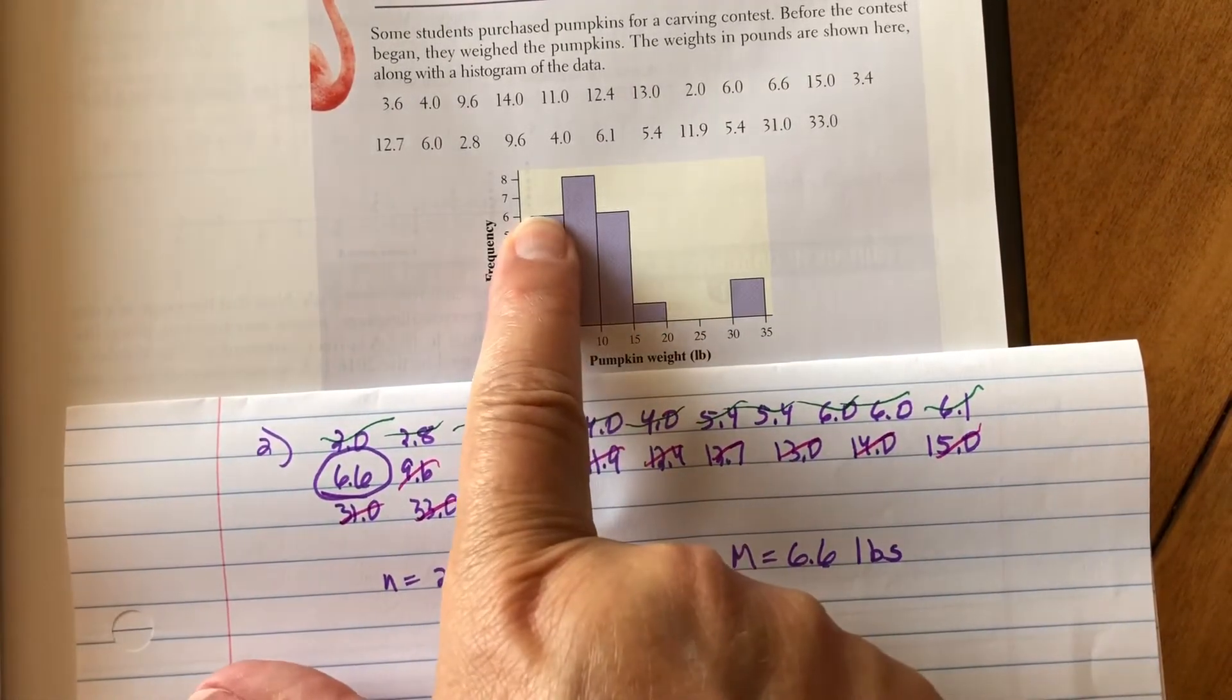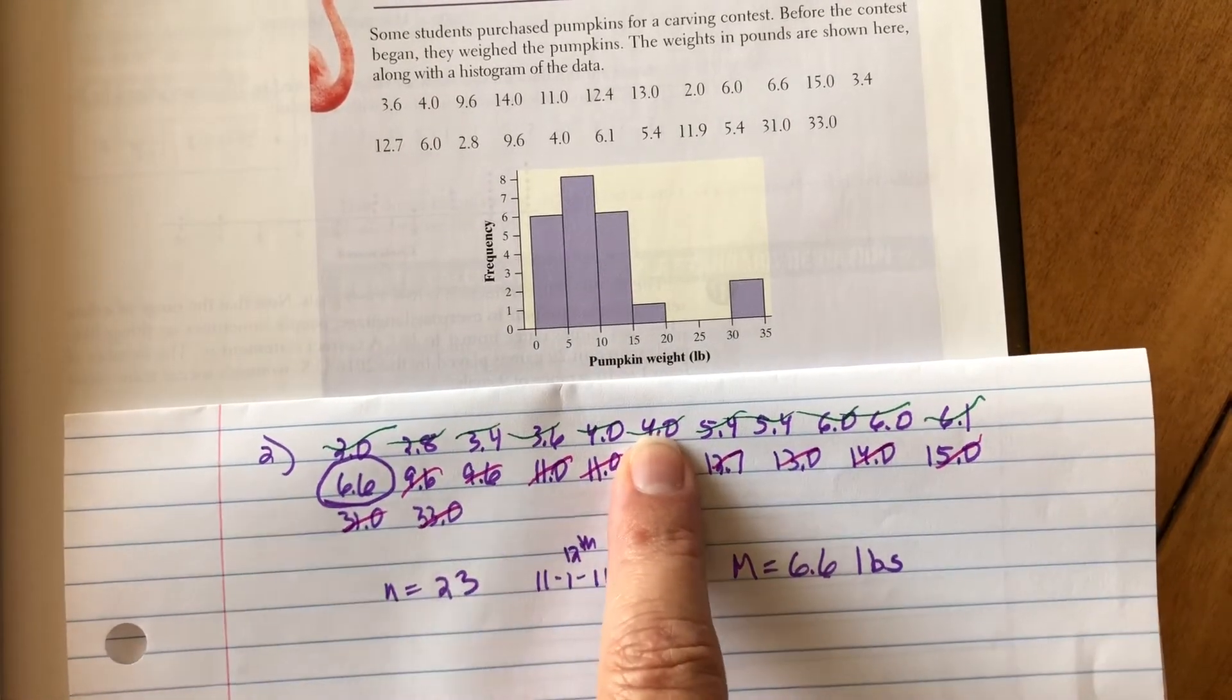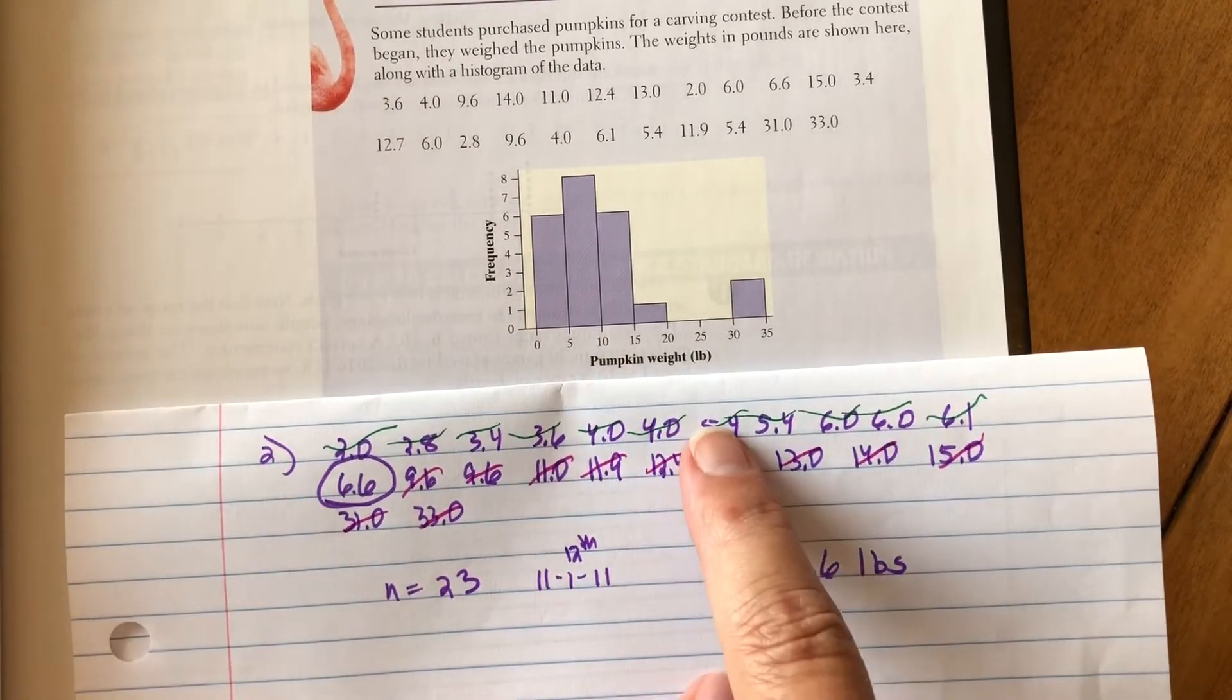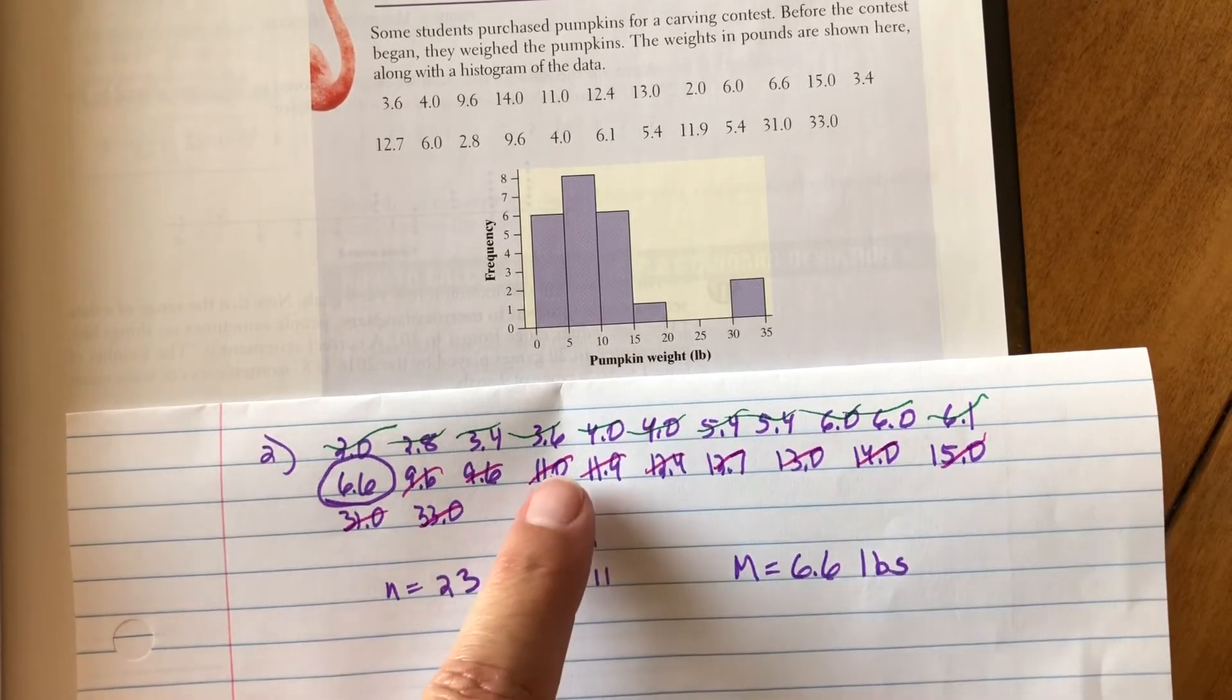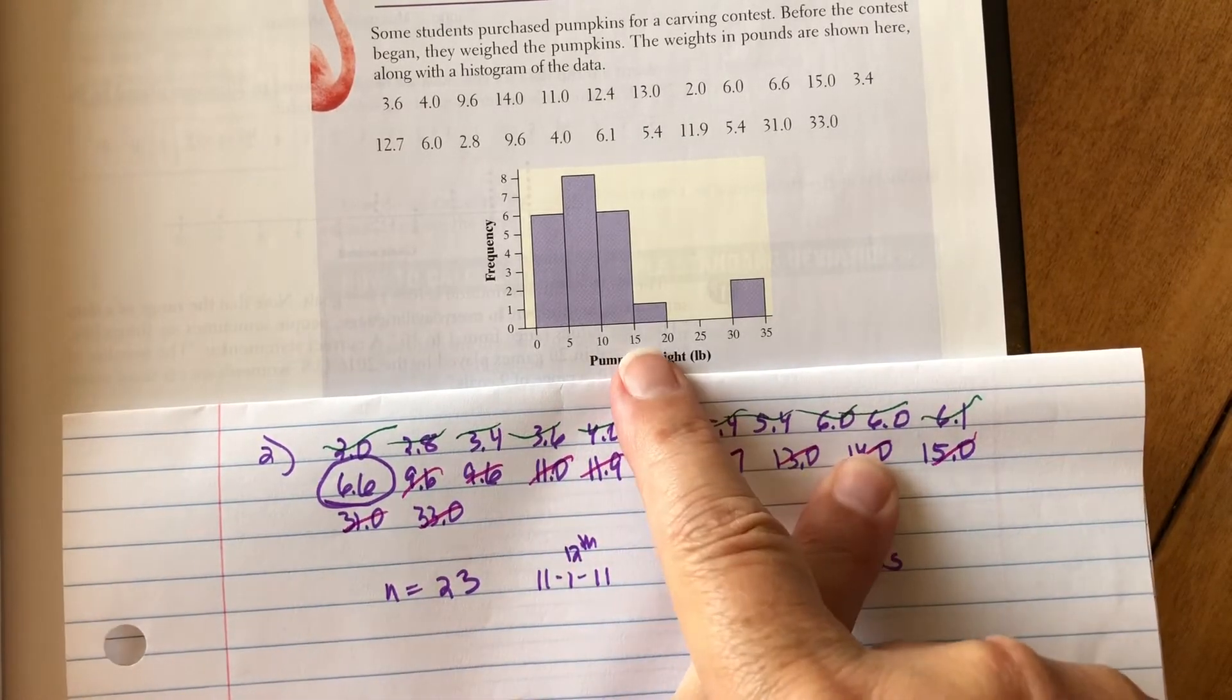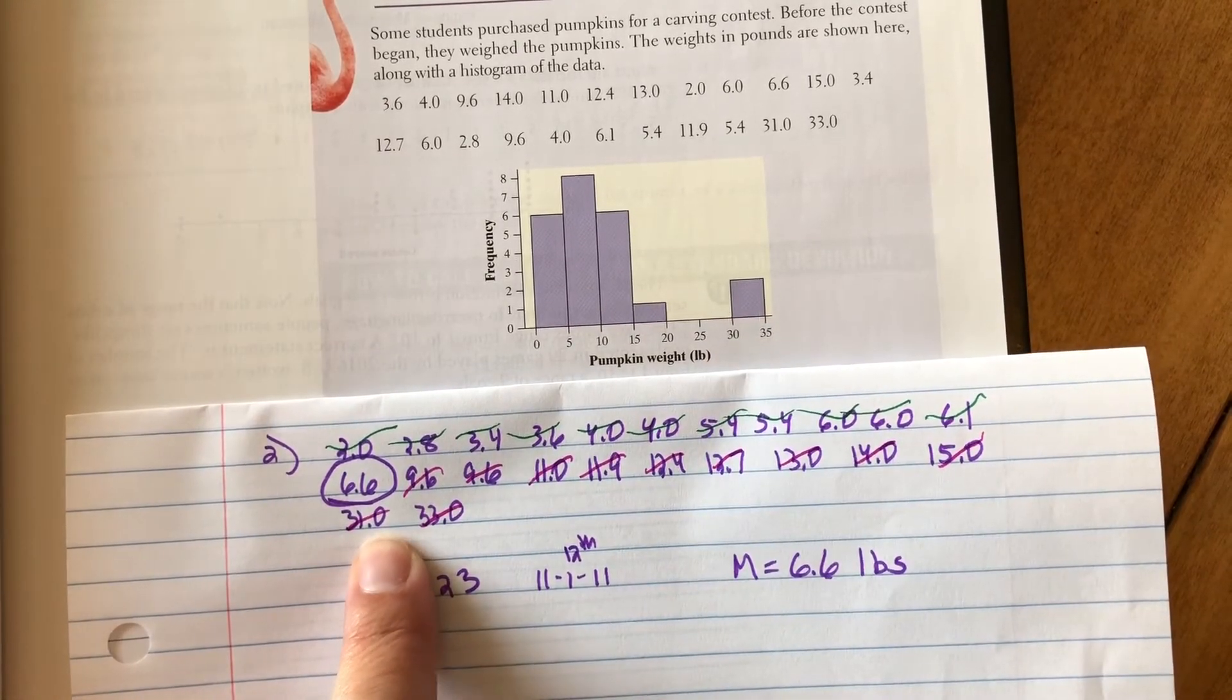So I should have six pumpkins between zero and five pounds, not including five pounds. So one, two, three, four, five, six. Yep. I should have eight pumpkins between five and 10 pounds. One, two, three, four, five, six, seven, eight. Yep. Six pumpkins between 10 and 15 pounds. One, two, three, four, five, six. One pumpkin between 15 and 20 pounds. And then there's my two pumpkins between 30 and 35 pounds. Okay. Just thought we'd check that.